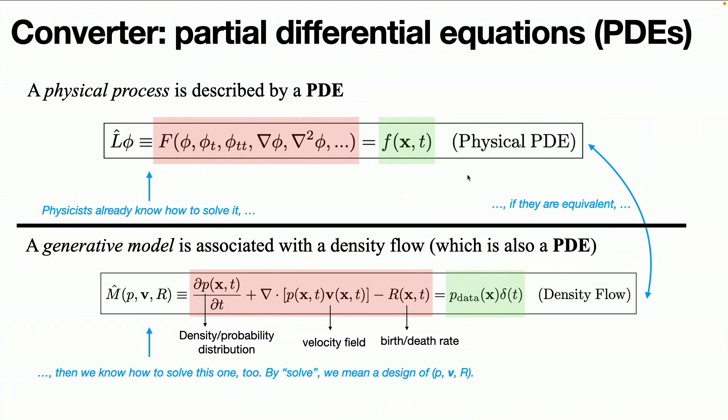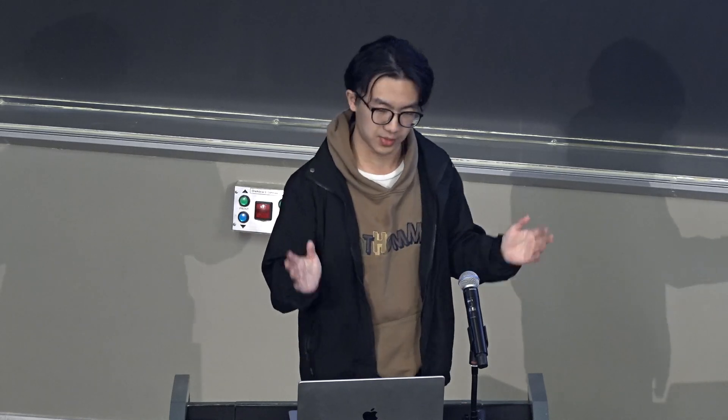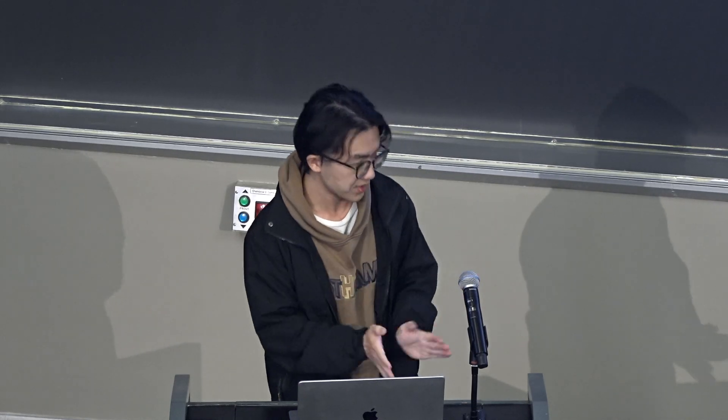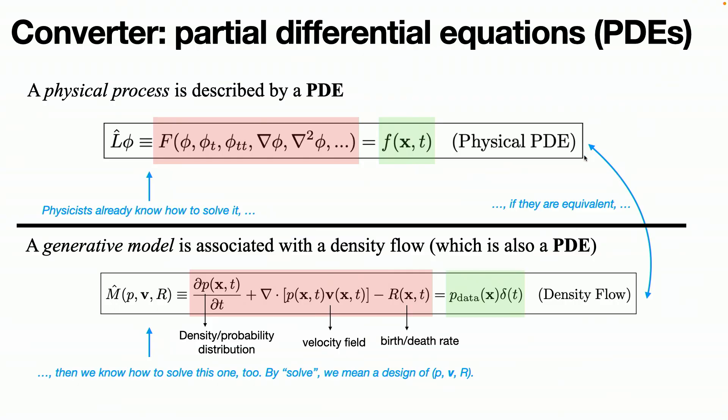And generative models, mathematically speaking, are just the Fokker-Planck equation, which has this form. If these two PDEs are actually the same PDE, then physicists have a long literature of deriving analytical solutions of these physical PDEs. Then we can directly transfer the solutions already available in the physics literature and transfer that into generative models. In this way, one solvable physical PDE would then translate to one valid generative model.